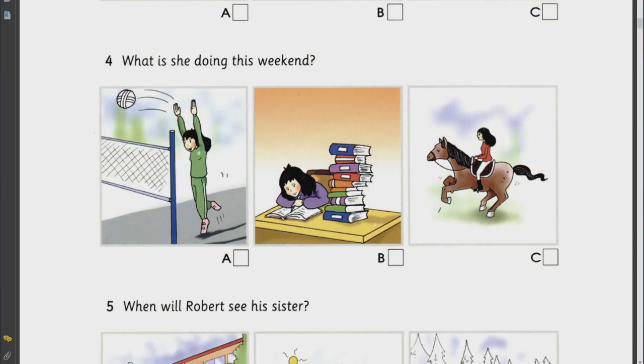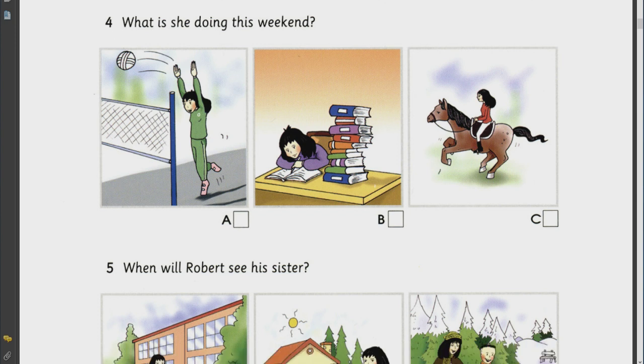Four. What is she doing this weekend? So. What does your sister do at the weekend? Well. She usually has a lot of homework. So she's got to study. She doesn't do that every weekend. Does she? No. Last weekend she was in a volleyball competition. This weekend she's going horse riding. Excellent.